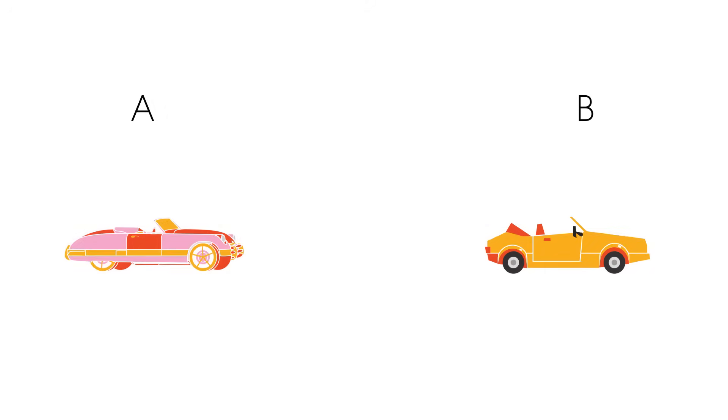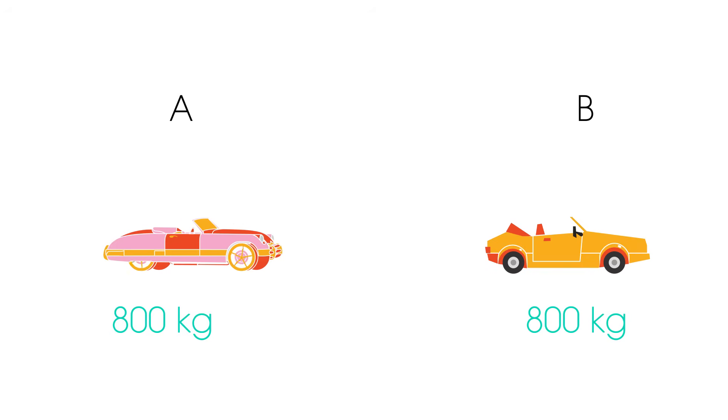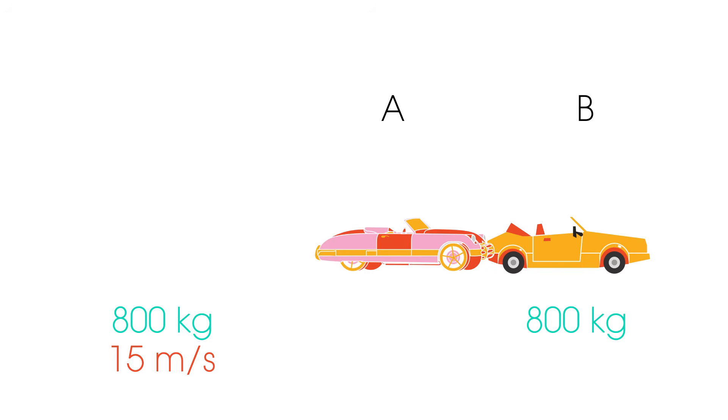Let's look at how to apply this. Two cars of equal mass, 800 kilograms, collide. Before the collision, car B is at rest, while car A is traveling at 15 meters per second. Calculate the momentum of car A.